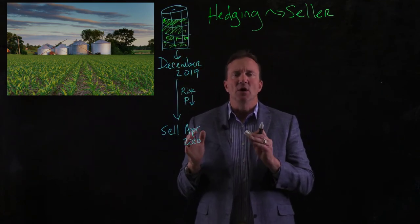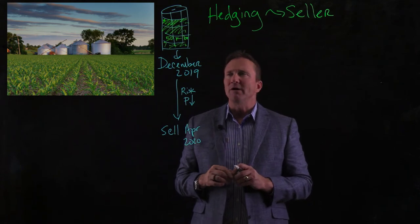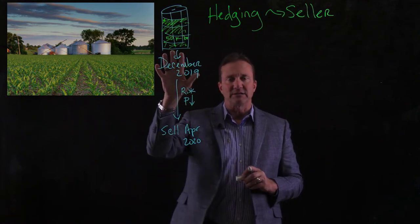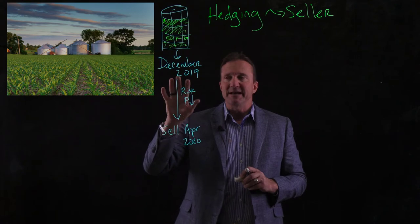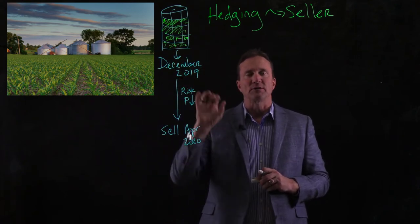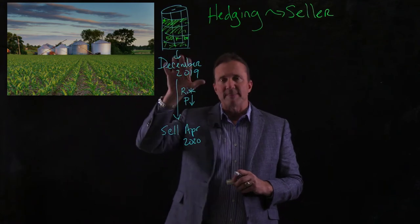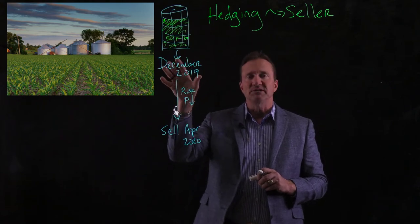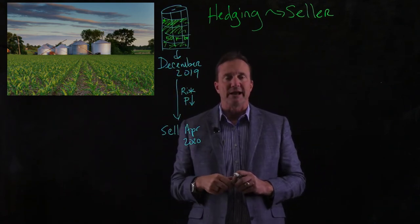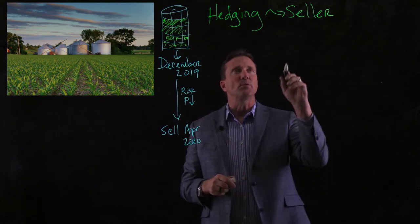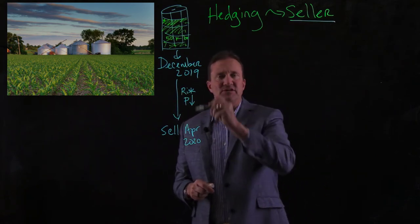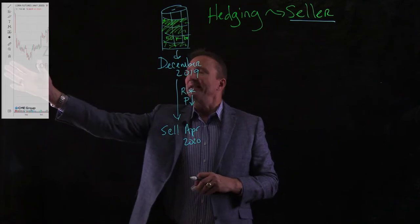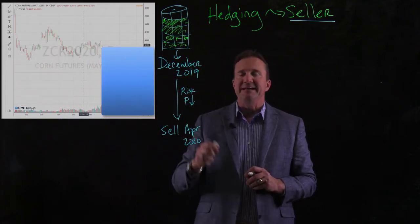Today is December and the corn is in storage. You might ask why not just sell it now if the price is good. Maybe this corn is under a loan — I've borrowed money on it and can't sell it until the loan is paid back. There could be lots of reasons. The concept works the same even if the corn is in a field, but our scenario is December with corn in a bin to be sold in April.